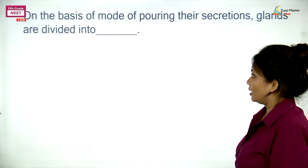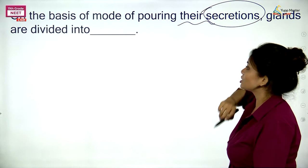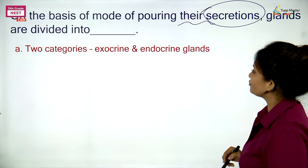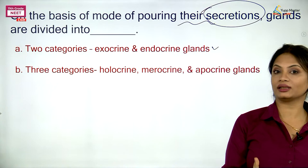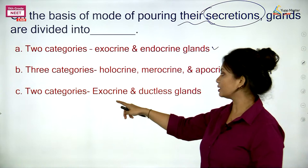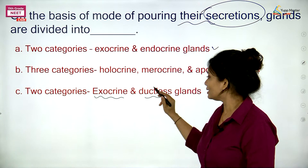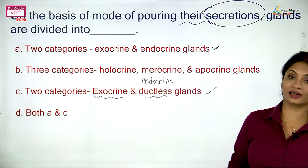On the basis of mode of pouring their secretions, glands are classified. Are they two categories — exocrine and endocrine — or three categories: holocrine, merocrine, apocrine? Note that holocrine, merocrine, apocrine is about what happens to the cell after secretion, not how secretions are poured. The correct classification by mode of pouring is exocrine (with duct) and ductless (endocrine). Both A and C are correct, making the answer D.